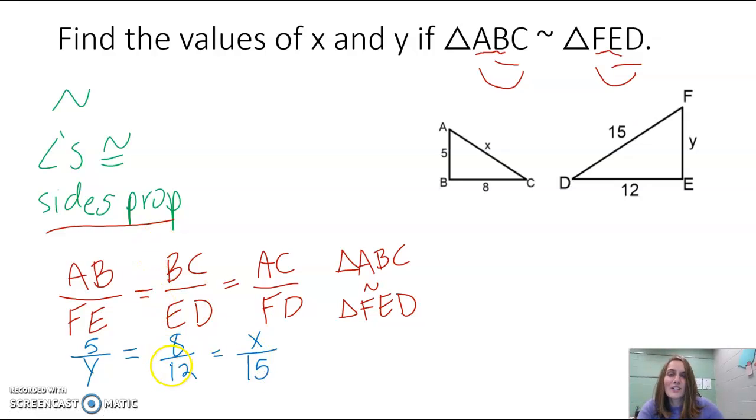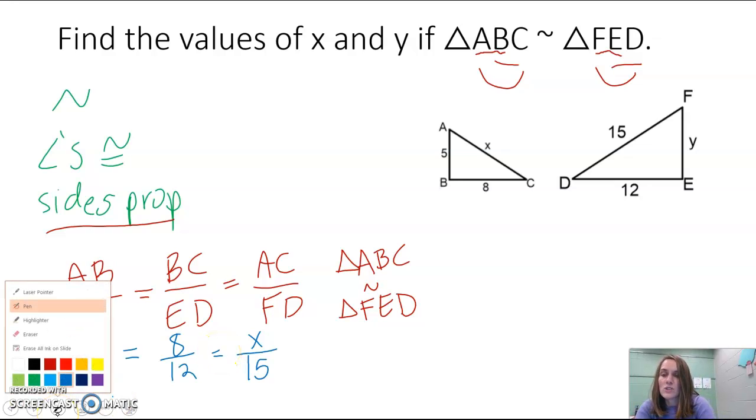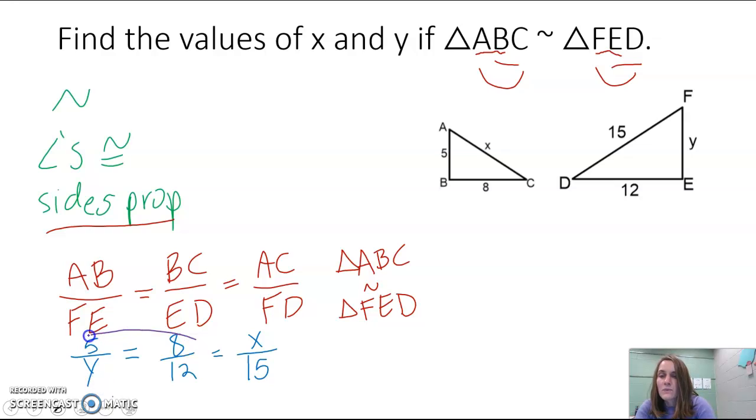So if you notice here, this equation that we have is not really an equation because it has two equal signs, and we have two variables. But what that means then is that we can actually break this up into two different equations. We can look at the first part here as one equation. 5 over Y equals 8 over 12. And we can solve it because we have one ratio equals another ratio. We have a proportion, so we can cross multiply.